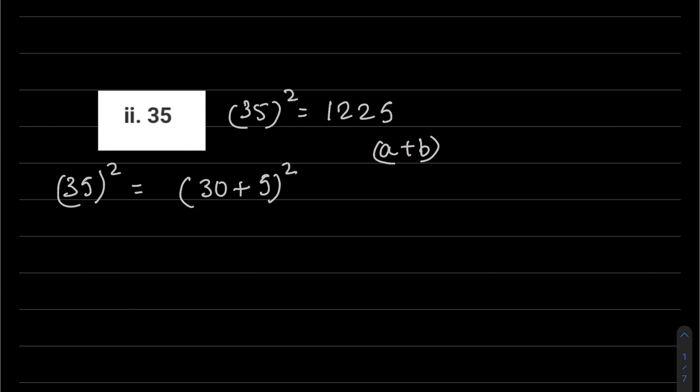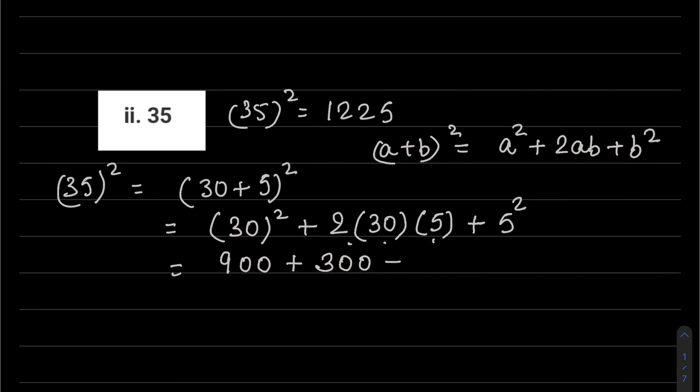The identity is a plus b whole square equals a squared plus 2ab plus b squared. So a squared, that is 30 squared, plus 2ab, so 2 into 30 into 5, plus b squared, which is 5 squared. 30 squared means 30 into 30, that is 900. 2 into 30 is 60, and 60 into 5 is 300. And 5 squared is 25. So adding them all: 900 plus 325 gives 1225.